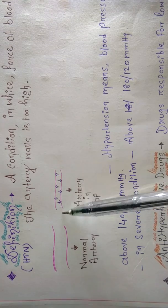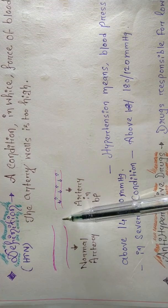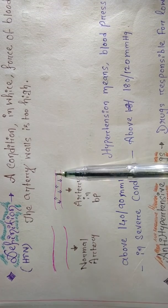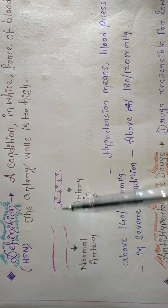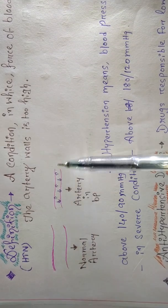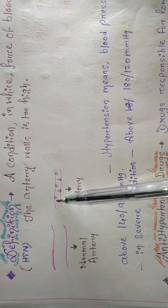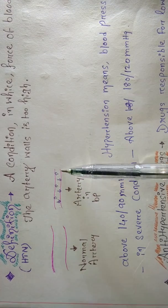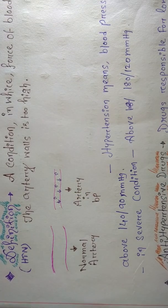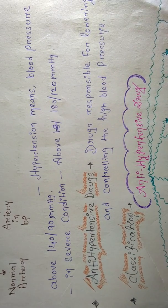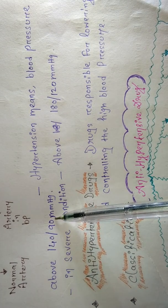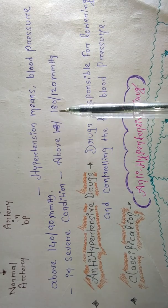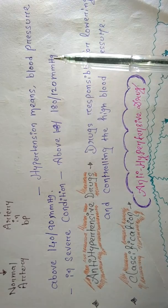Now blood doesn't have enough space to flow properly, so to flow properly, blood has to put pressure against the artery walls. They are putting pressure against the blood vessel — this is called high blood pressure, or hypertension. Hypertension means blood pressure above 140/90 mmHg, but in severe cases it goes above 180/180 mmHg.